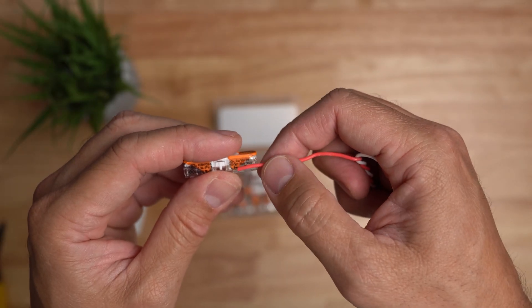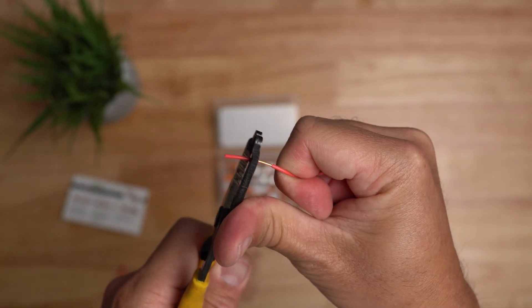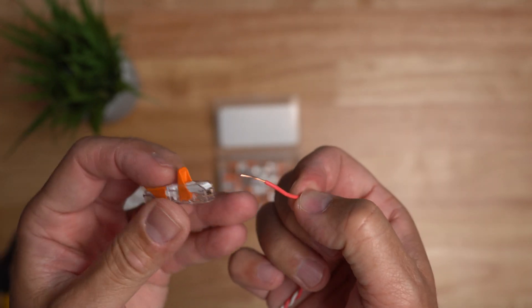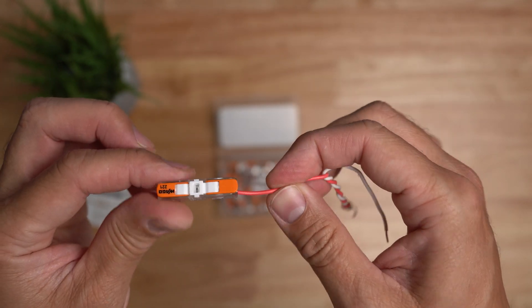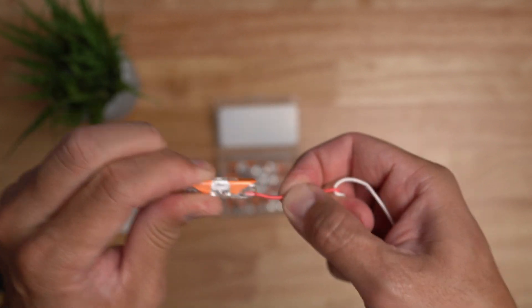There's a guide on the side on how long you need to strip the wire which is around 11 millimeters and flip the lever up, slide the wire in and flip the lever down. It locks it down that you will not be able to pull the wires out.